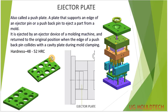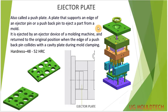Now we move on to the ejector plate. This is part of the ejector grid system — the ejector plate, ejector back plate, and ejector pins are all part of it. The ejector plate is also called a push plate. It is the plate that supports the edge of an ejector pin or push back pin to eject the part from the mold. It is ejected by the ejector device of the molding machine and returned to original position when the push back pin collides with the cavity plate during mold closing. The HRC will be 48 to 50.